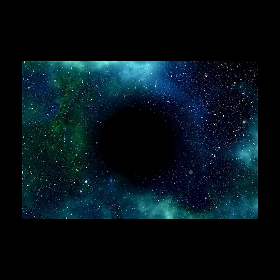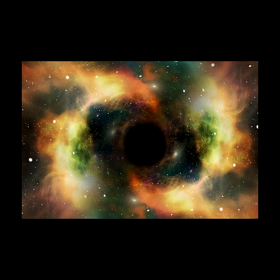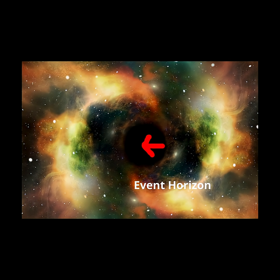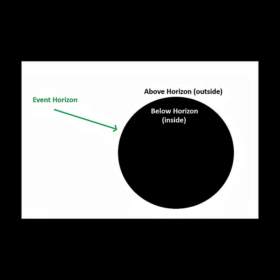Black holes themselves appear pitch black against any background light. They have well-defined sharp outer edges along their event horizon, which is a boundary layer that separates the rest of the universe from the interiors of the black holes. Just above the horizon, matter and energy can escape. Just below the horizon, nothing escapes, not even light.